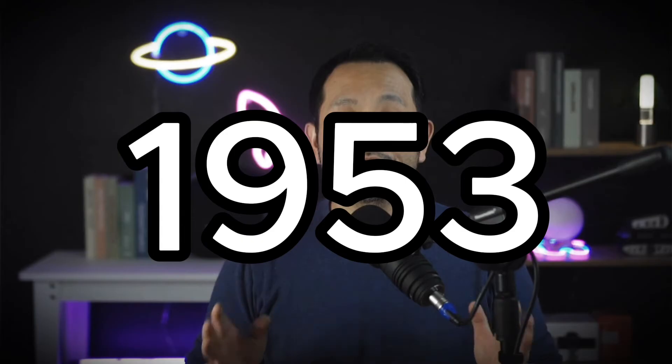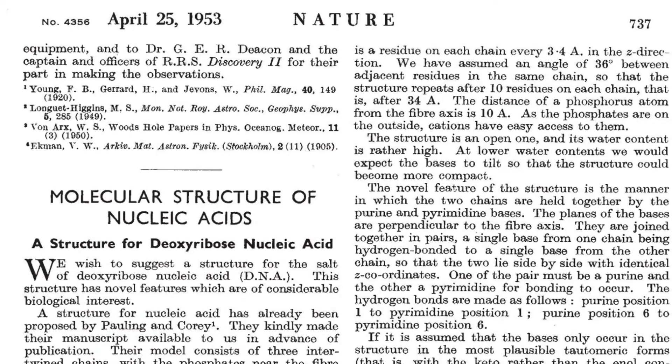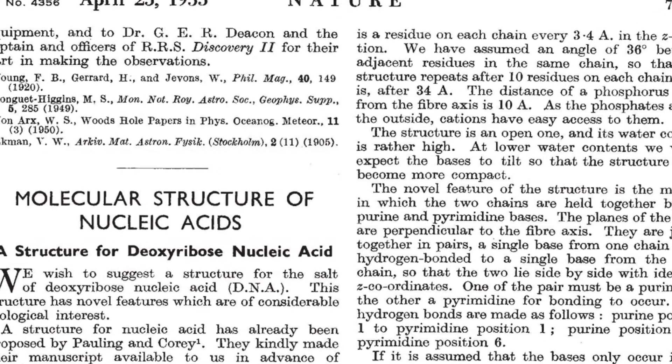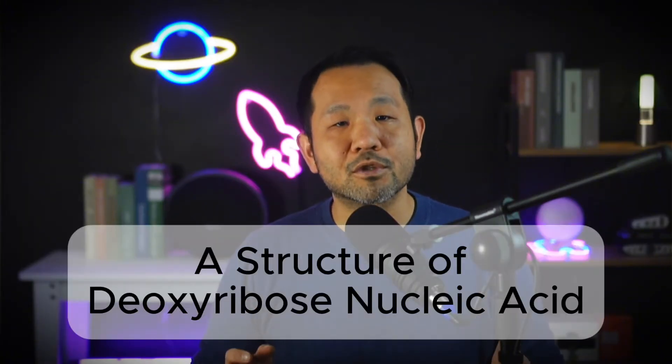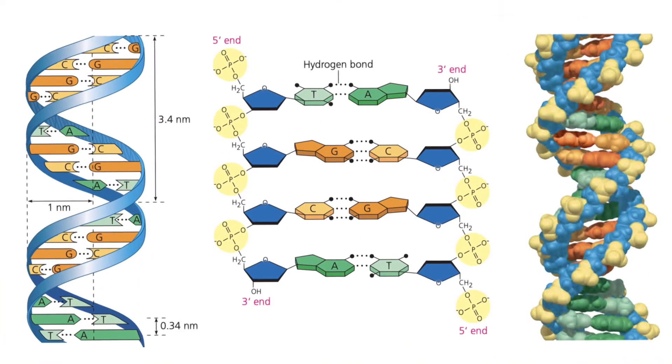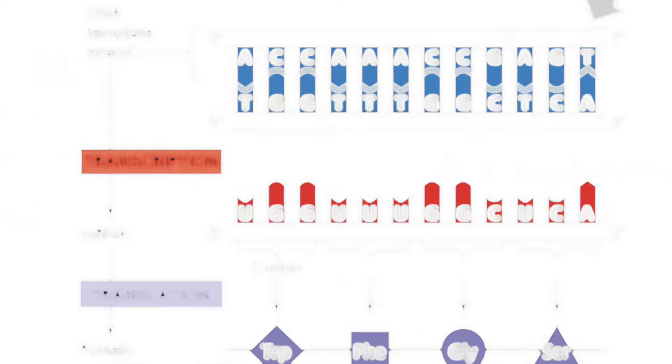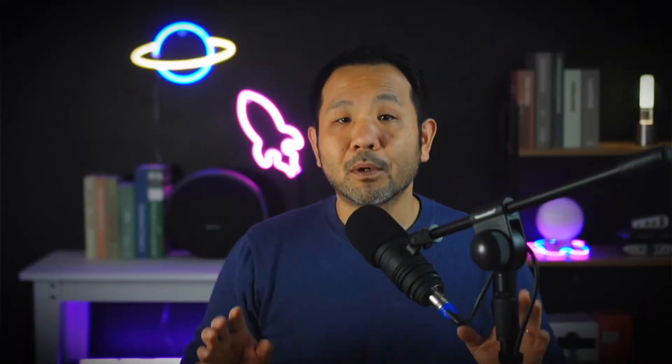The year is 1953, and Watson and Crick have just published one of the most important papers of the 20th century, titled A Structure of Deoxyribose Nucleic Acid. This paper would change the future. It was a monumental moment in biology because it not only laid out the structure of DNA, but how its structure correlated to its ability to carry genetic information and to be an excellent self-replicator. But we need to go back in time just a bit more.